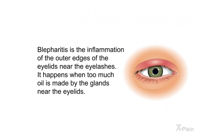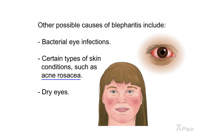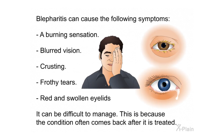Blepharitis. Blepharitis is the inflammation of the outer edges of the eyelids near the eyelashes. It happens when too much oil is made by the glands near the eyelids. Other possible causes include bacterial eye infections, certain types of skin conditions such as acne rosacea, and dry eyes. Blepharitis can cause a burning sensation, blurred vision, crusting, frothy tears, and red and swollen eyelids. It can be difficult to manage because the condition often comes back after it is treated.